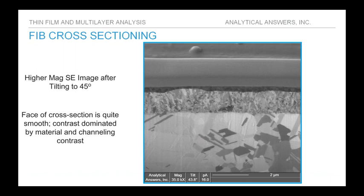The finished cross-section is shown here. The left image is a top-down view where we've milled partway into our platinum cap to reach the plane of interest. By tilting the sample to 45 degrees, we expose the cross-section to the ion beam, forming the secondary electron image. This particular sample is a plated edge connector on a printed circuit board. You can see the platinum cap on top, a thin gold layer on the surface of the pin, a nickel layer beneath it, and the copper substrate. Material contrast clearly delineates those layers.